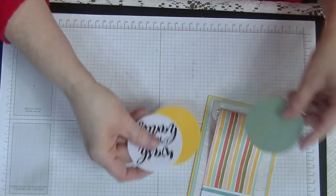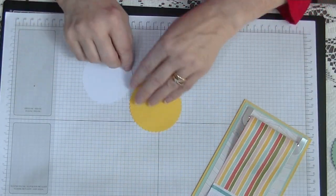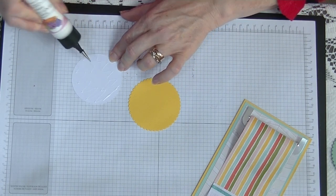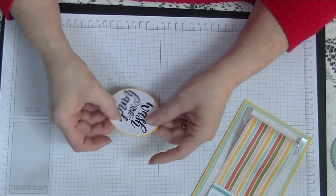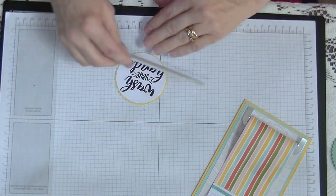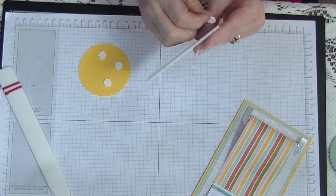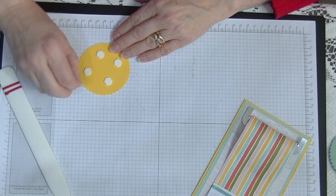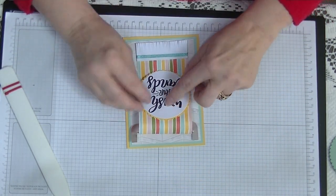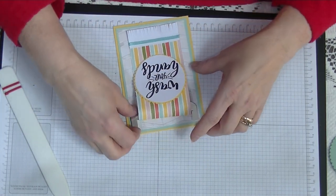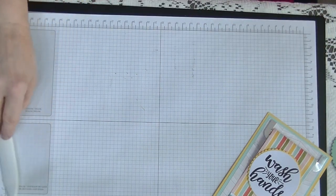Now comes my choice of whether I want to go that way or that way. I pick the yellow so we're going to go yellow. We'll pop our Wash Your Hands onto our yellow scallop circle and that's looking beautiful. I'm going to put a couple of normal dimensions on the back and we're going to pop them onto the front of the card. That's the front of the card done.